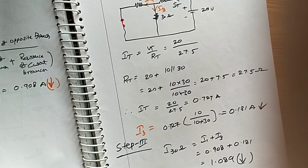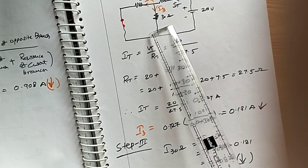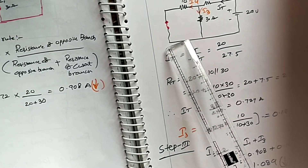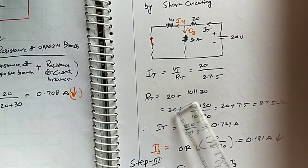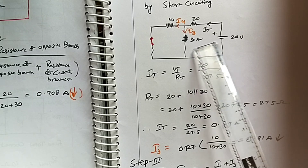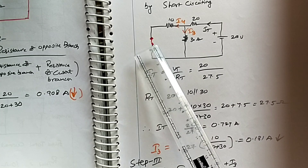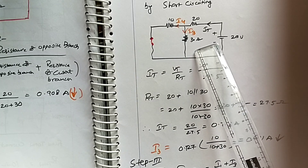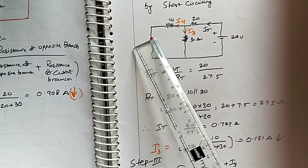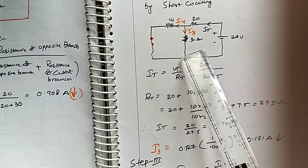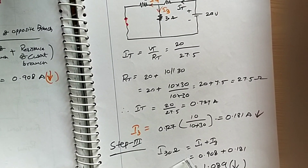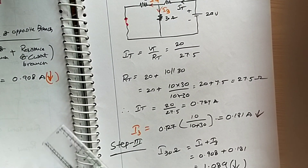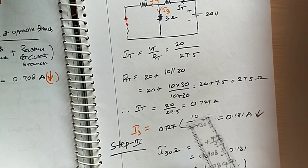The current flowing through the 30-ohm resistance is approximately 1.089 amps. This is a simple three-step method to calculate using the superposition theorem: give one source the 'super power' while remaining sources are short-circuited or open-circuited, then calculate. That is why it is known as the superposition theorem — just follow these three steps to calculate the total current.